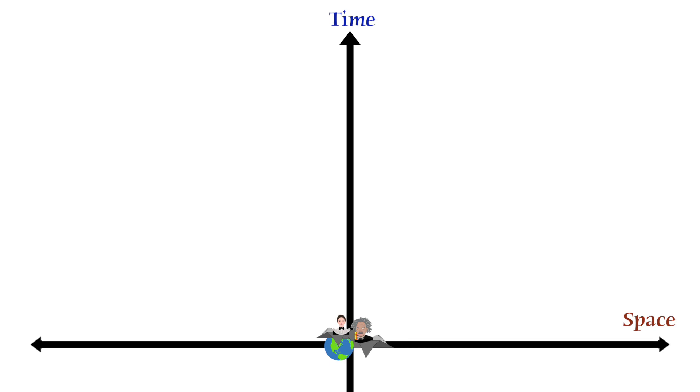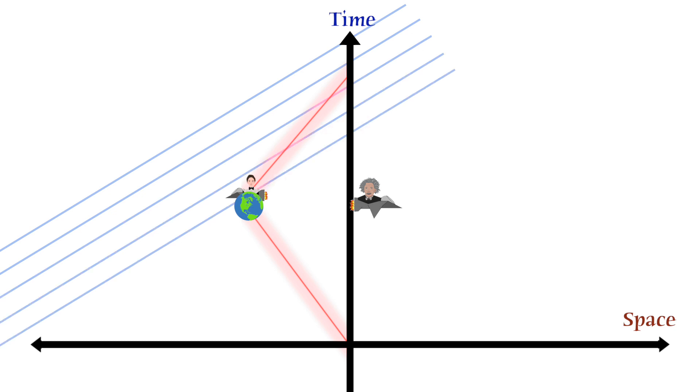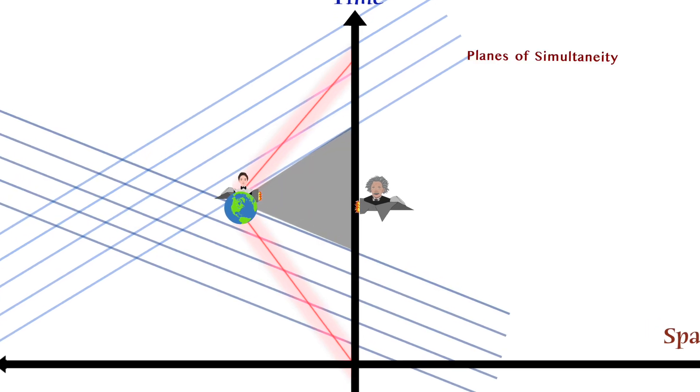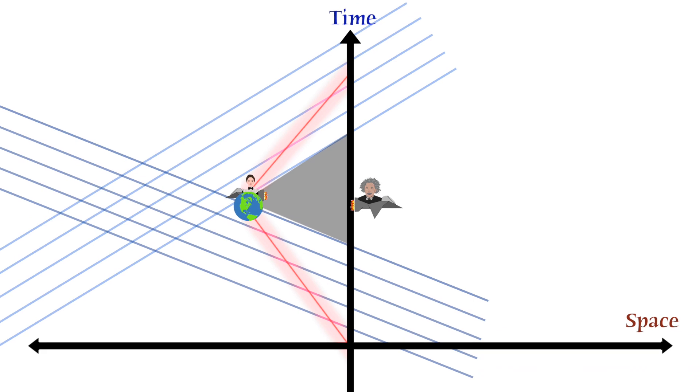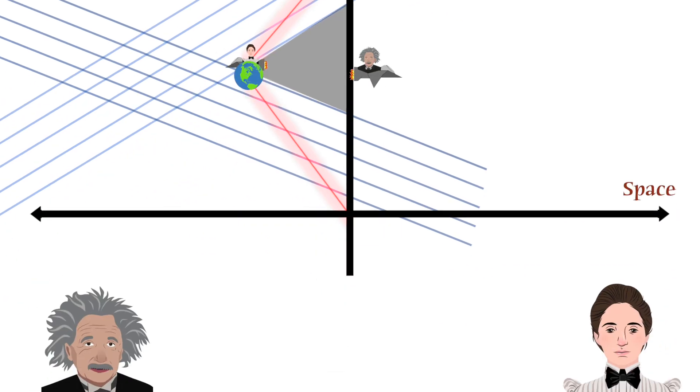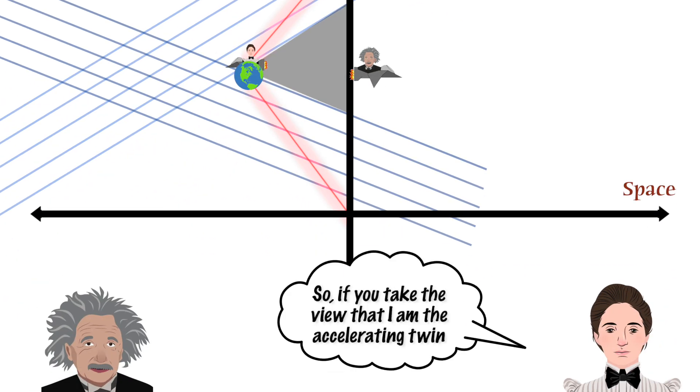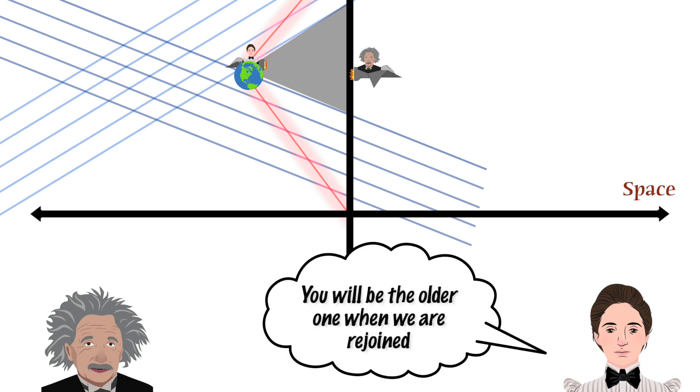This is seen most easily by drawing a second spacetime diagram, which is a mirror of the first, and which describes the world paths of the twins if the Earth twin instead of the space twin is decided to be the accelerating one. In this diagram, the Earth twin departs at a certain velocity, reaches the turnaround point, then begins accelerating back towards the space twin. The acceleration is represented by the sharp turning point in the Earth twin's world path. In this spacetime diagram, the gray missing time zone no longer belongs to the space twin, but instead to the Earth twin.